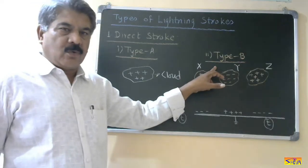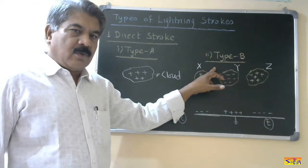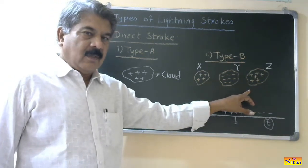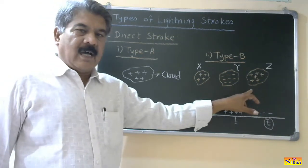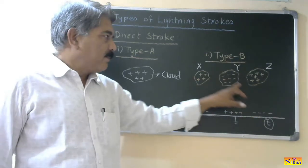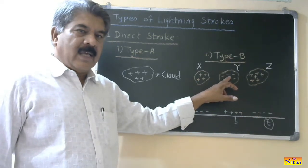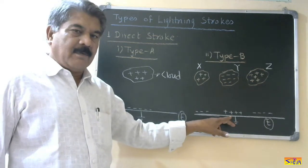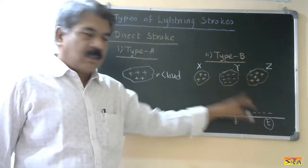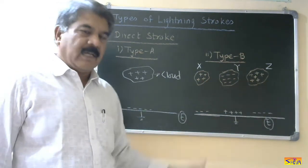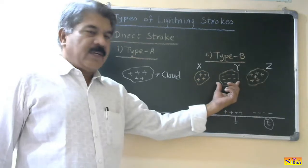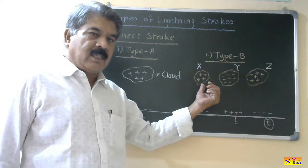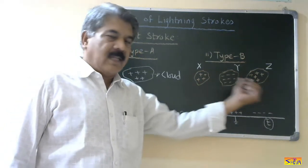Next is the Type B stroke. Type B strokes involve three clouds: X, Y, and Z. Clouds X and Z have the same charge — let us say positive charge — and cloud Y has the opposite, negative charge. Below cloud Y on the earth there will be positive charges, and below clouds X and Z there will be negative charges. The potential of cloud Y is held up due to the presence of the positively charged clouds X and Z.